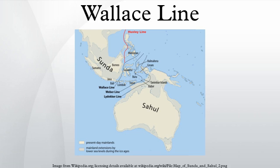The Wallace line, or Wallace's line, is a faunal boundary line drawn in 1859 by the British naturalist Alfred Russell Wallace that separates the ecosystems of Asia and Wallacea, a transitional zone between Asia and Australia. West of the line are found organisms related to Asiatic species. To the east, a mixture of species of Asian and Australian origin is present.